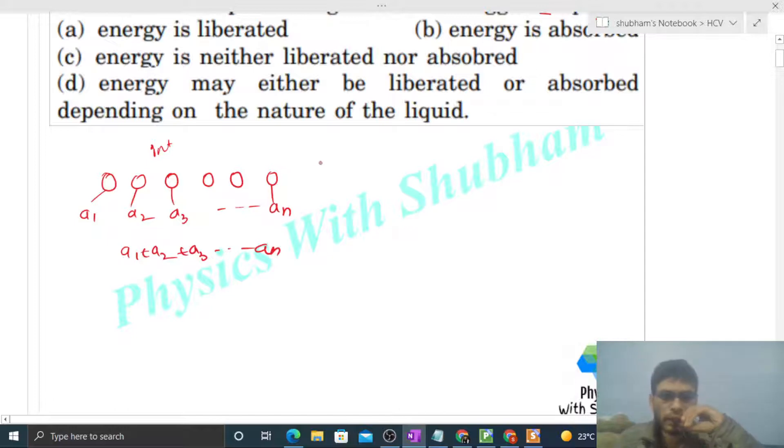Finally, these water droplets merge together to form a single drop. Then this drop has a surface area, let's say capital A. So we can say the final surface area of the liquid is capital A.